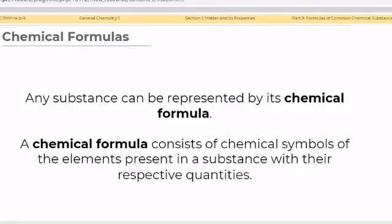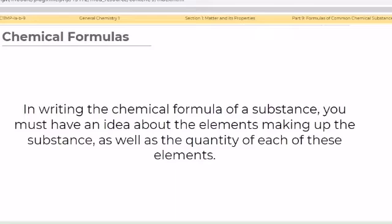Any substance can be represented by its chemical formula. A chemical formula consists of chemical symbols of the elements present in a substance with their respective quantities. Take note, in writing the chemical formula of a substance, you must have an idea about the elements making up the substance, as well as the quantity of each of these elements.